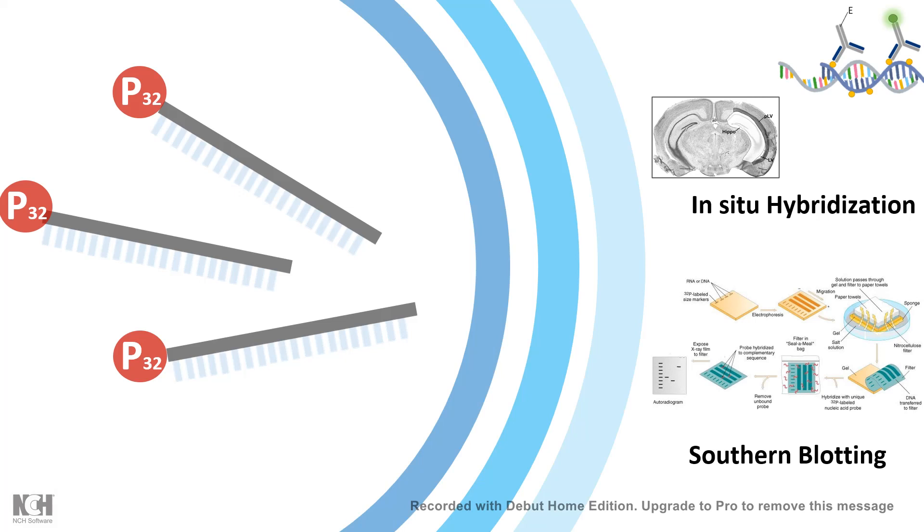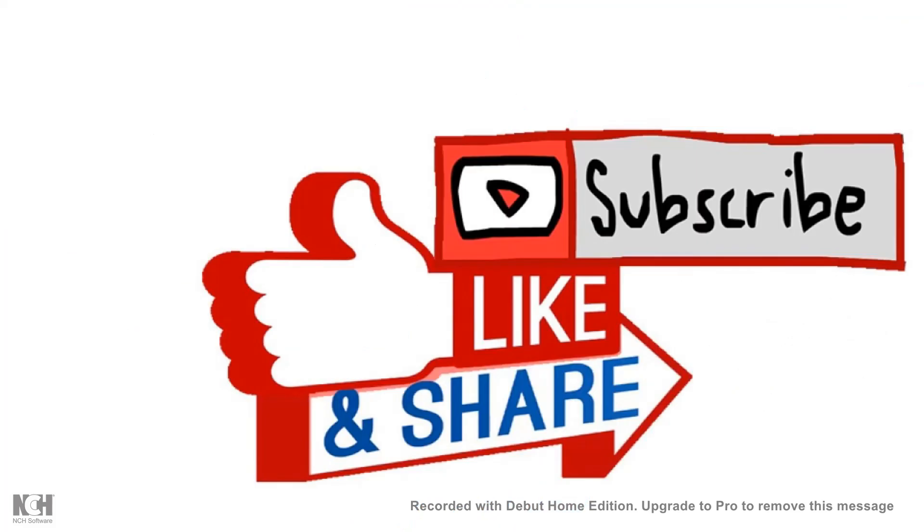So, alkaline phosphatase and T4 polynucleotide kinase, both are really important tools in molecular biology. I hope you enjoyed this video. If you liked this video, give it a quick thumbs up. Don't forget to like, share and subscribe. Thank you.